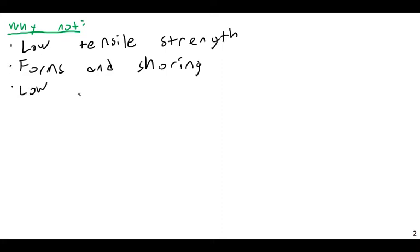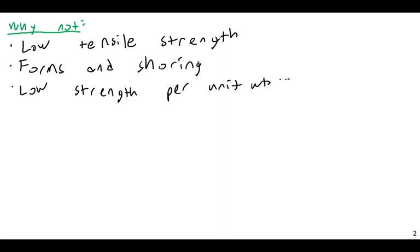Concrete also has low strength per unit weight or volume. Concrete may be stronger than, say, wood in certain cases, but compared to most civil engineering materials — especially steel — it does have low strength per unit weight or volume. This is why we don't make airplanes out of concrete, for example.